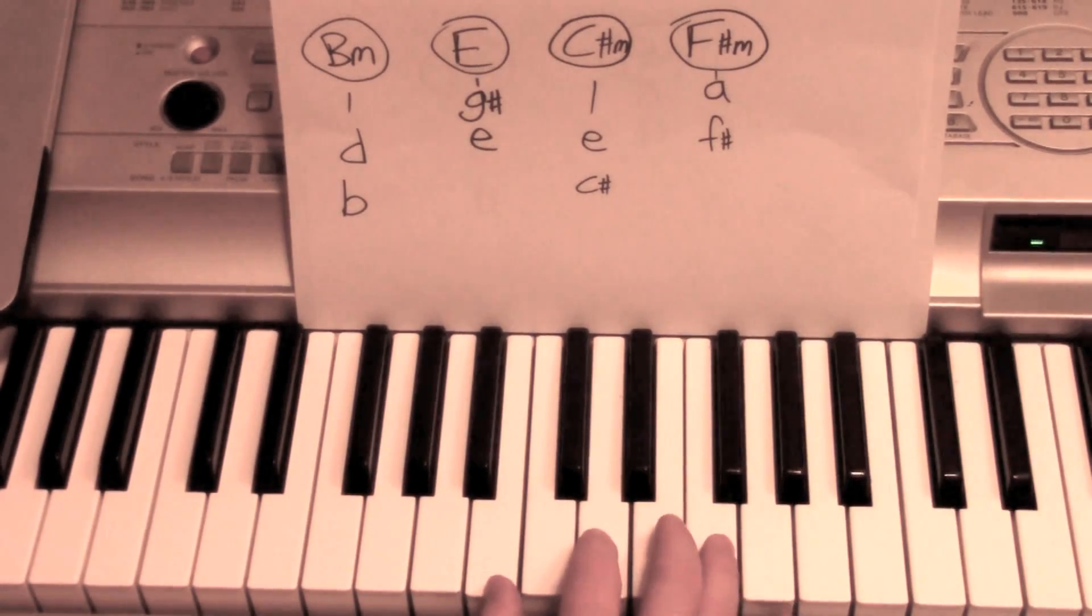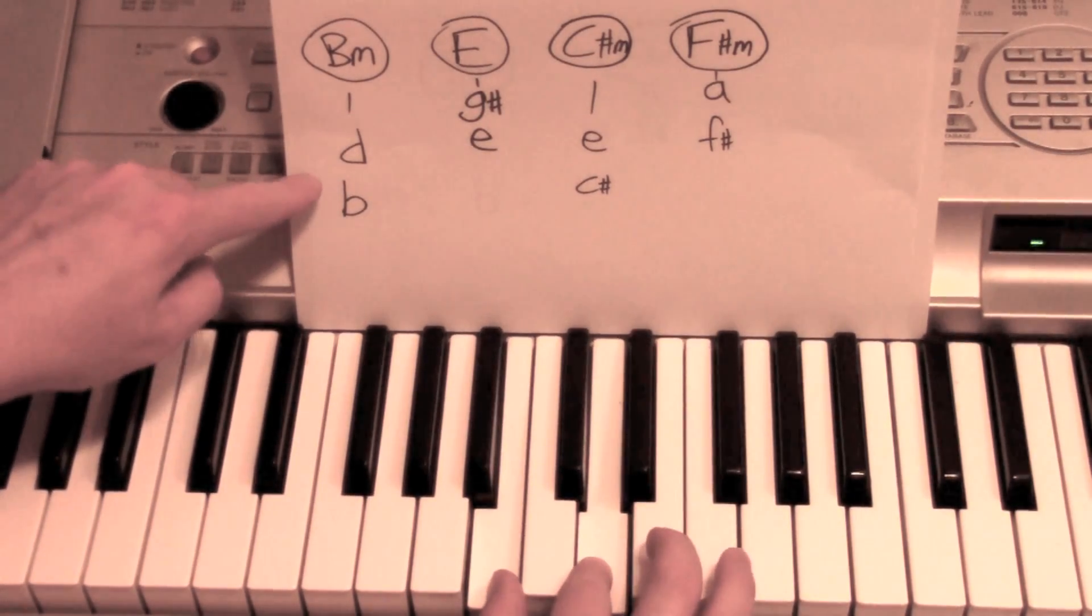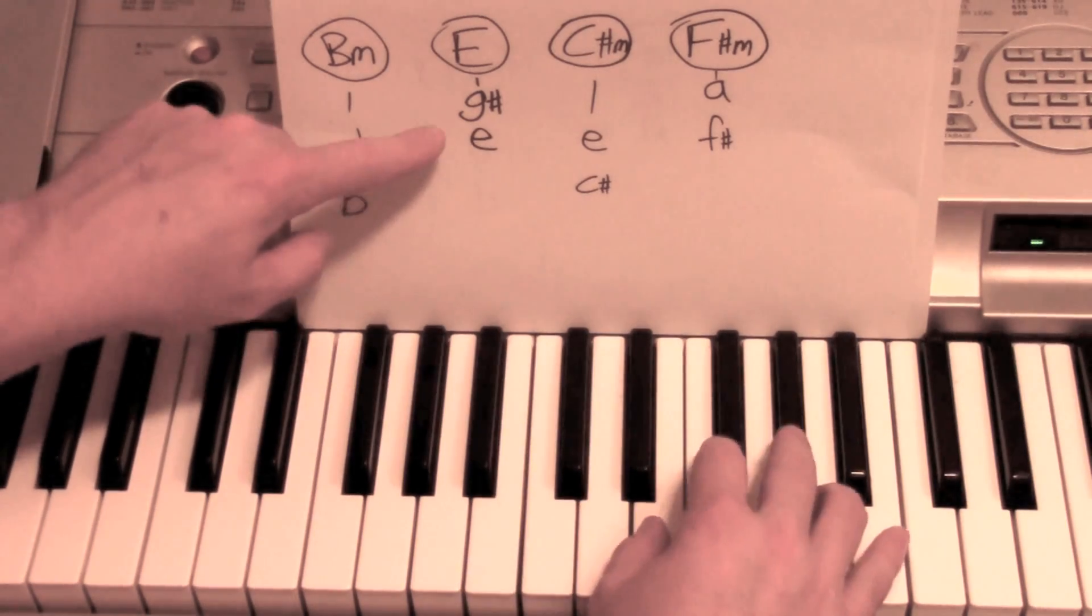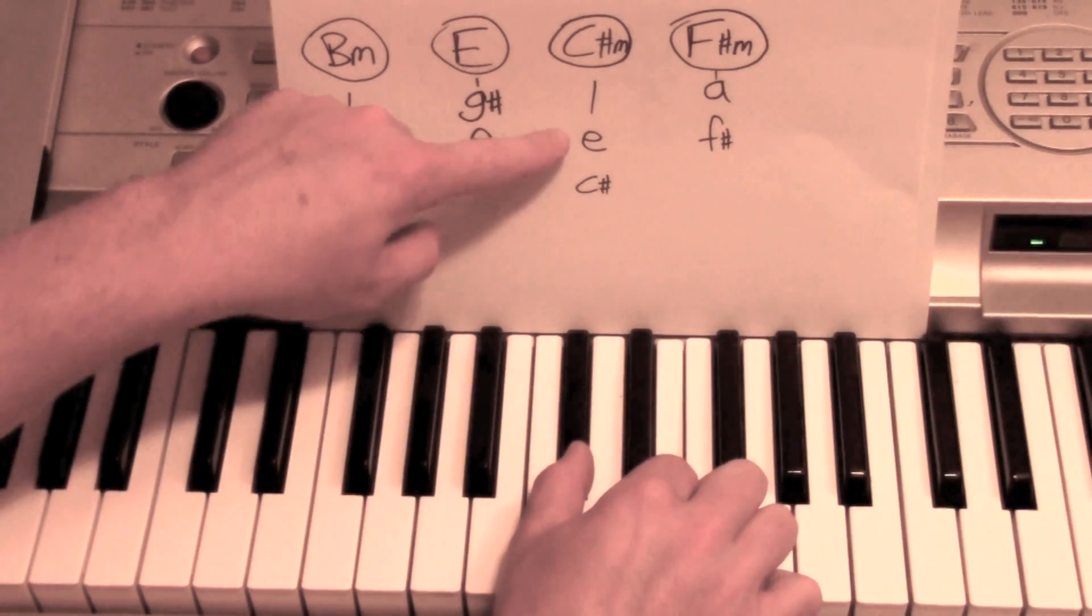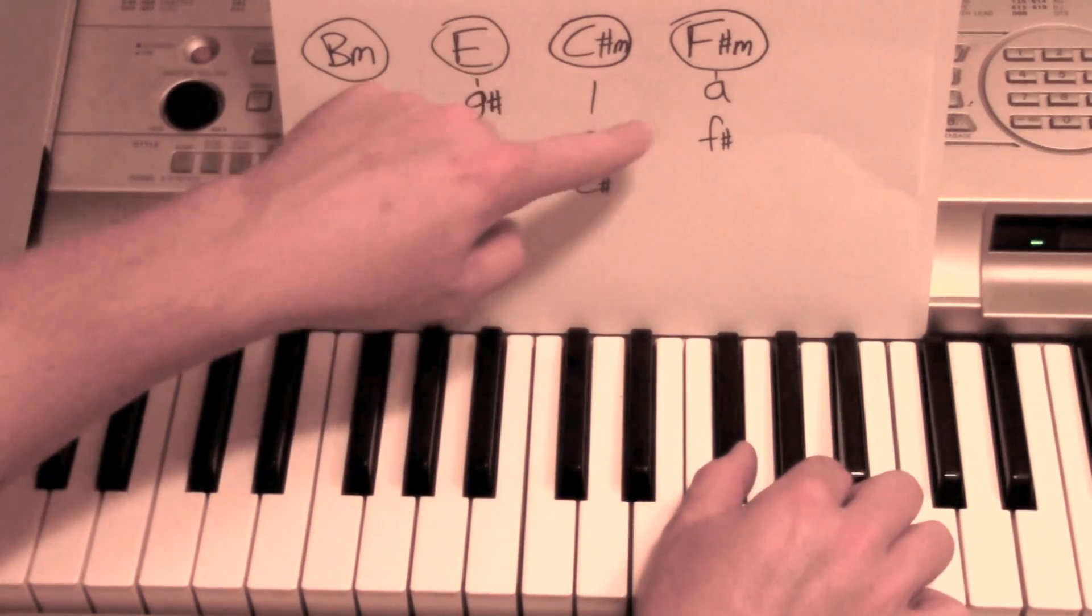Alright, so here's what's happening. The right hand is playing a B and a D, to an E and a G sharp, to a C sharp and E, to F sharp and A.